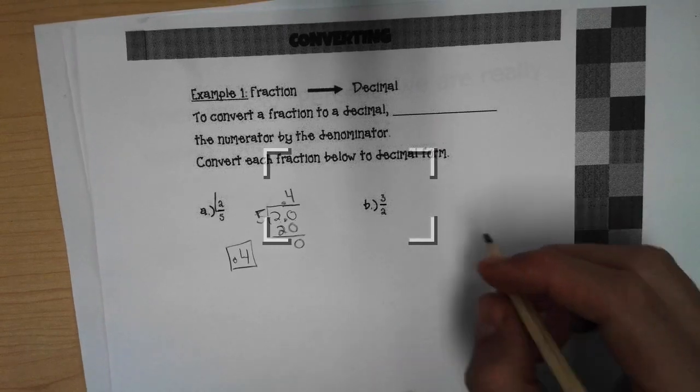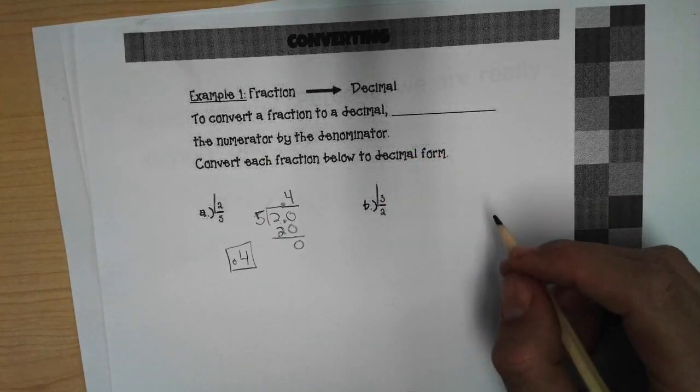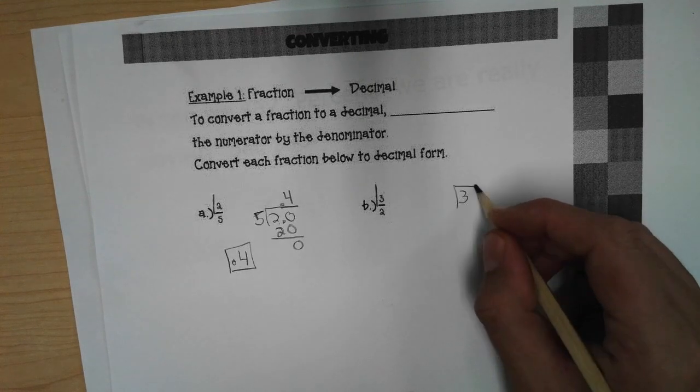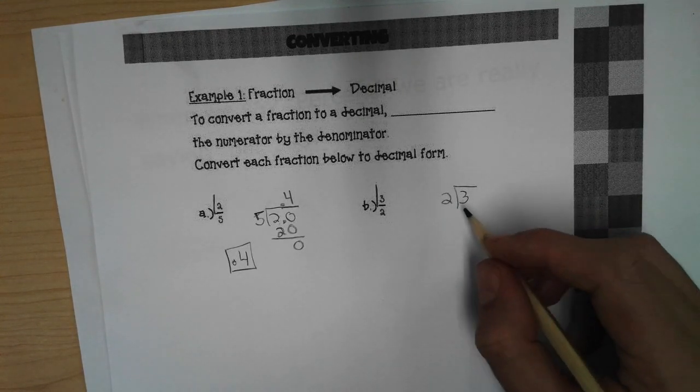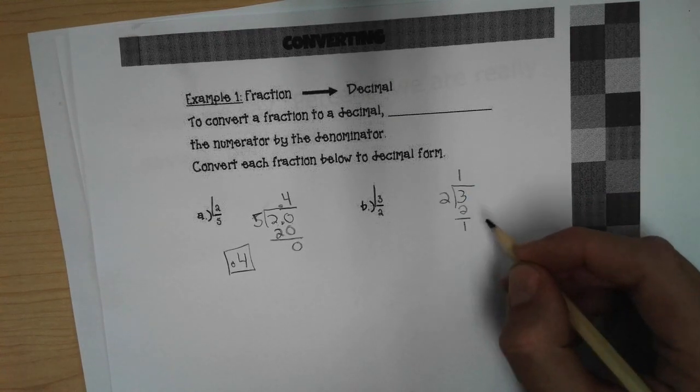Let's take a look at part B here. Again, draw my line here. Three goes on the inside and a two goes on the outside. Two goes into three one time. The remainder of one.